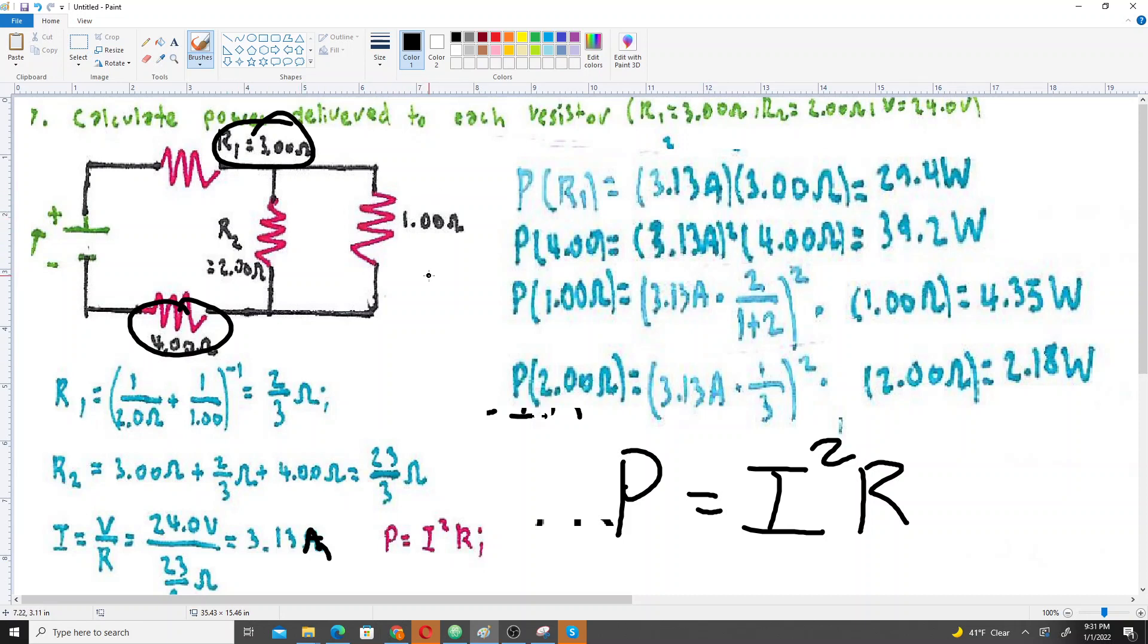The 2 ohm and the 1 ohm, because they're wired in parallel, so the current through each of those is different. For the 1 ohm, the current is the same for all these, but for the 2 and the 1 ohm right here...